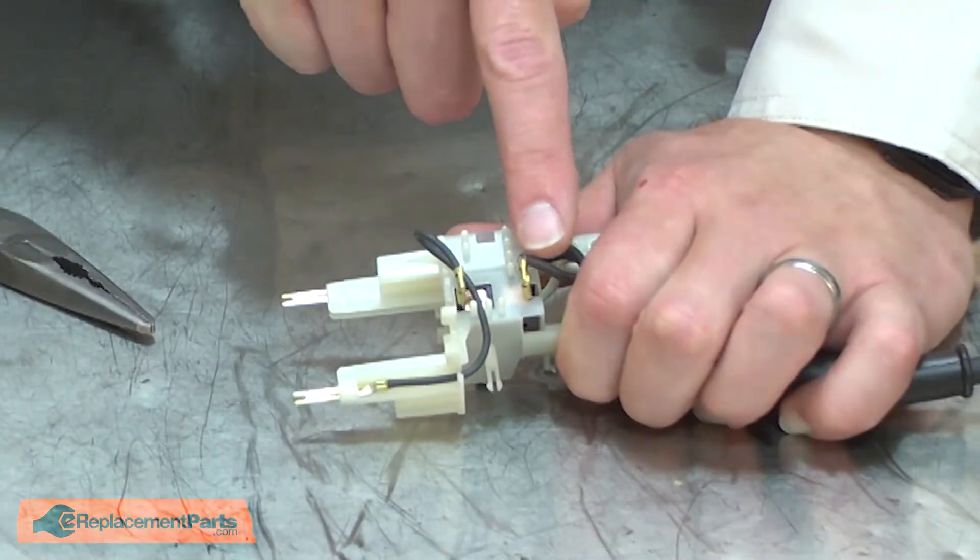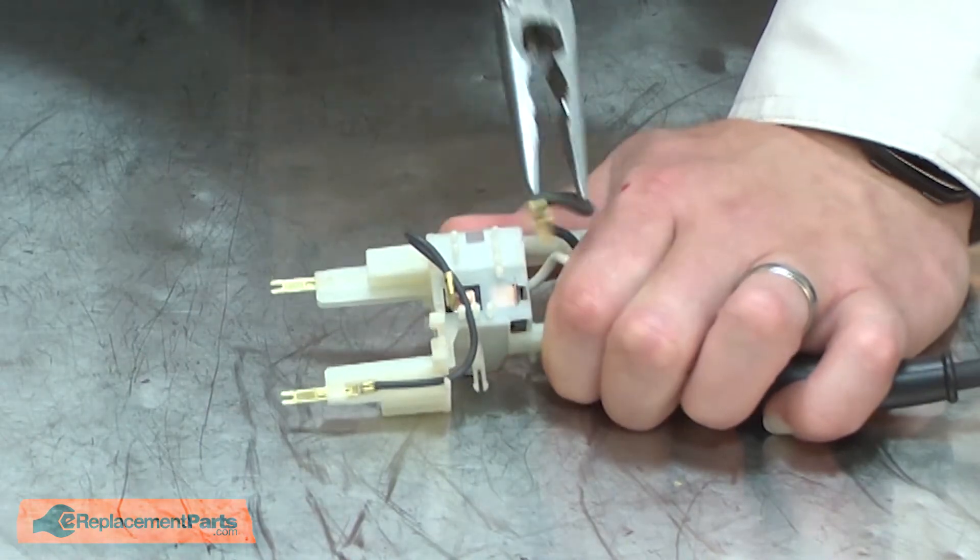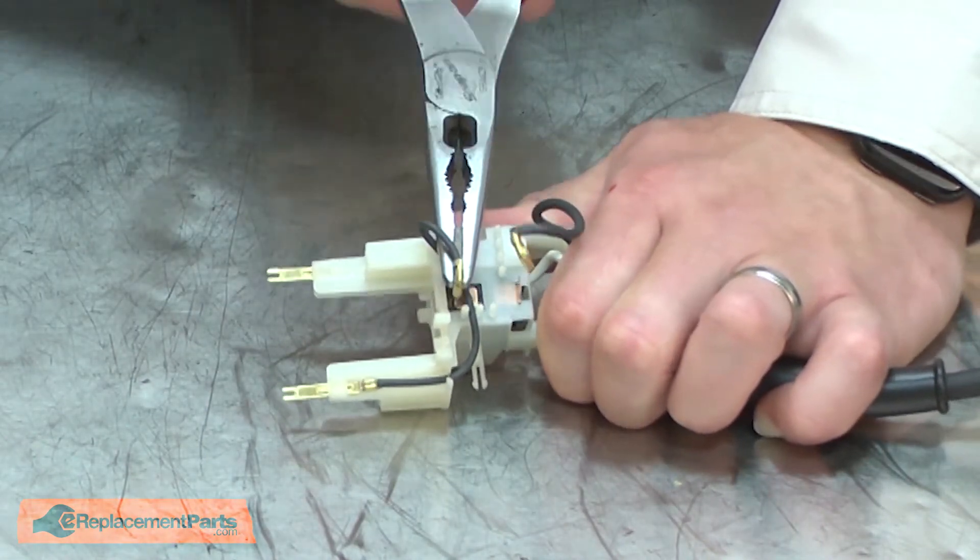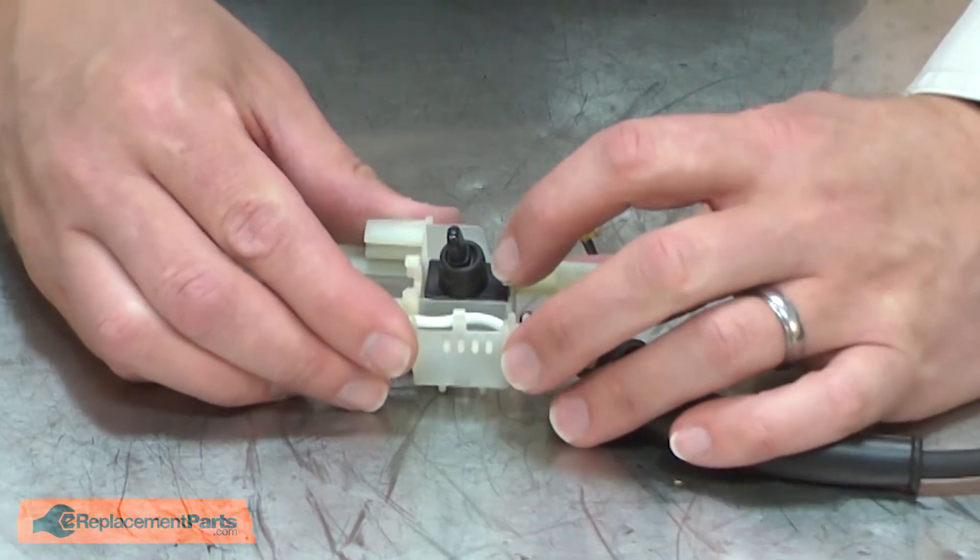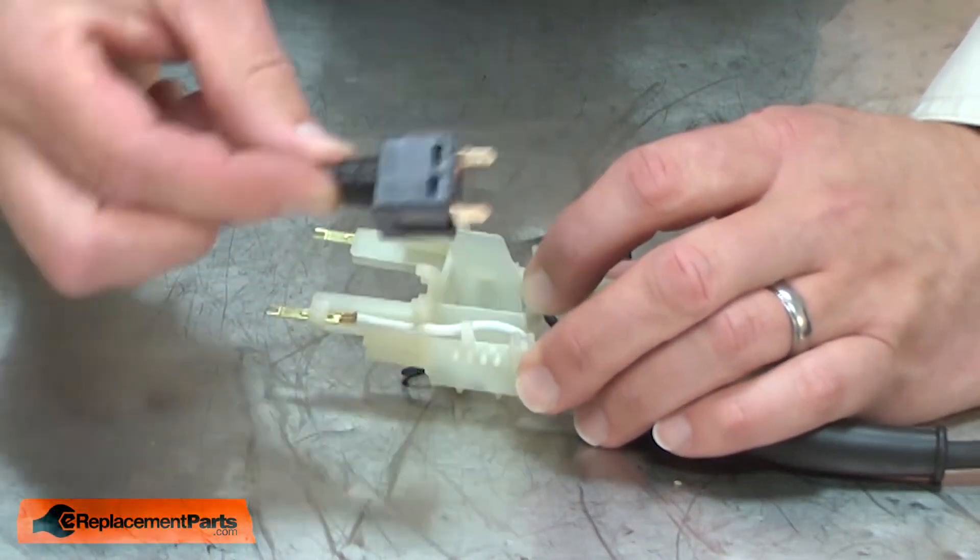Now remove the two black wires from the back of the switch. With the wires removed, I can pull the switch away from the terminal block.